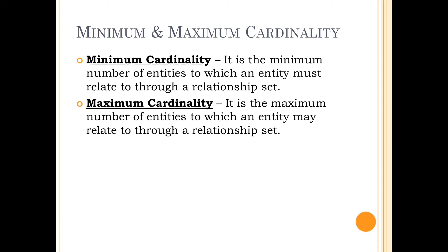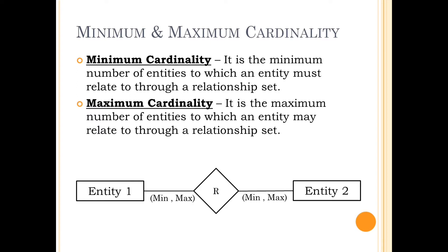Minimum and Maximum Cardinality: the minimum number of entities to which an entity must relate is called Minimum Cardinality. On the other hand, the maximum number of entities to which an entity can relate is called Maximum Cardinality. In an ER Diagram, these constraints are written inside brackets — Minimum Cardinality is written first, followed by Maximum Cardinality. The format is shown on the screen.